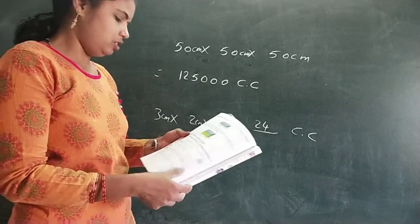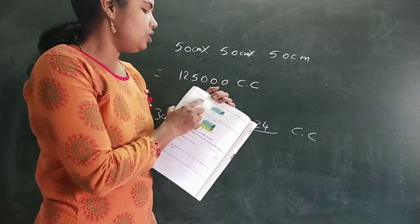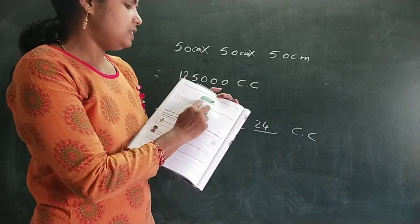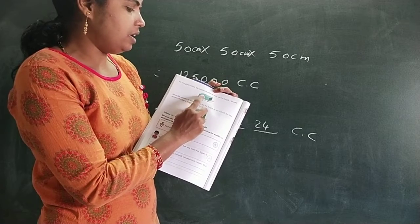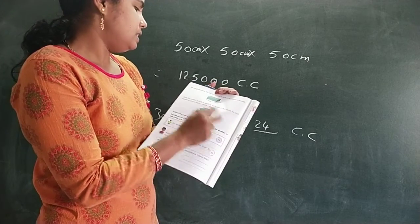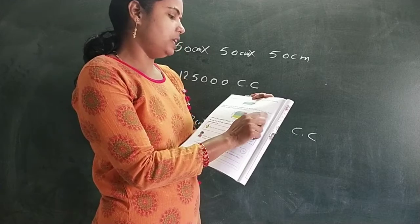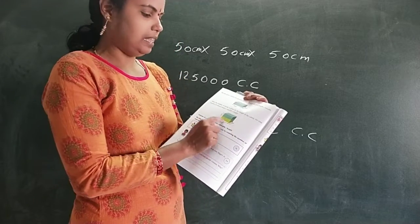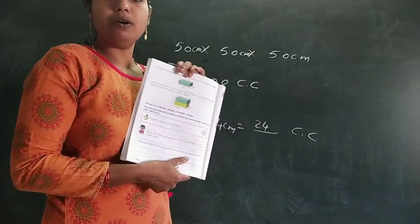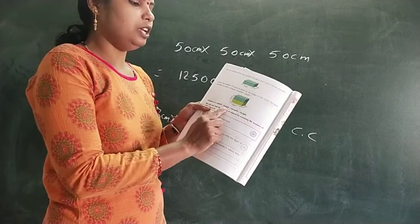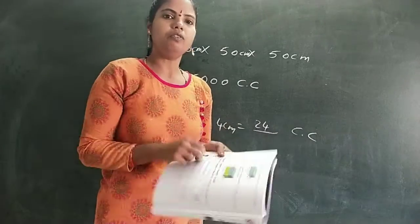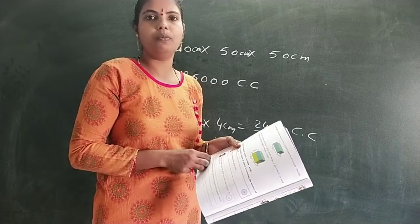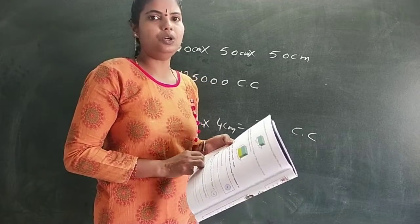Turn to page number 112. For any given cuboid, the number of cubes in each stack is length into breadth. See here — how many stacks are there? One, two, three. Since the number of stacks is given by the height of the cuboid, the total number of cubes is length into breadth into height. So the volume of a cuboid is length into breadth into height. In the volume of a cube, all sides are equal, so it is length into length into length. But the volume of a cuboid is length into breadth into height.